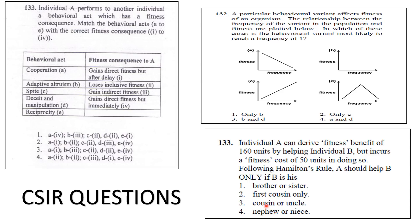Try to solve this question using Hamilton's rule. B is given as 160 units and C is given as 50 units — so cost is much less than benefit. The benefit is very high because the recipient is very closely related. So A should help B only if B is his brother or sister — not a cousin, uncle, nephew, or niece, as those are more distant relationships. The answer would be brother or sister.